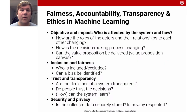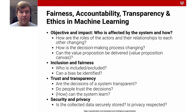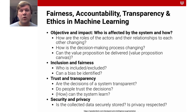Overall, when considering fairness, accountability, transparency and ethics in machine learning, you should consider the following aspects — a very nice overview by Dewey Ware. First and foremost, consider the objective and the impact: who is actually affected by a system and how? This includes asking how the roles of the actors and their relationships are changing due to this machine learning system. Consider how decision-making processes are changing, and whether the value proposition of the system can be delivered. There's a tool called the Value Proposition Canvas — Google it, it's very good for this.